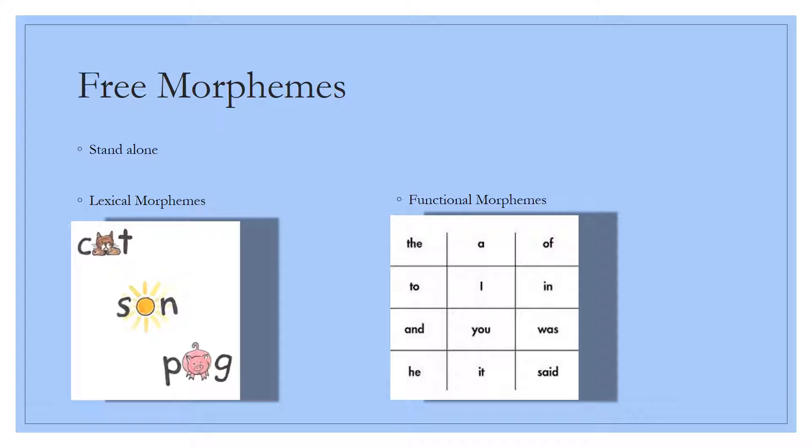Functional morphemes are made up of conjunctions, prepositions, articles, and pronouns. Some examples of lexical morphemes are words like girl, jump, yellow, ball, and house. While some examples of functional morphemes are and, above, the, her, and it.